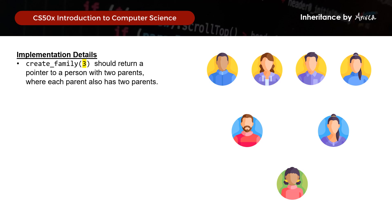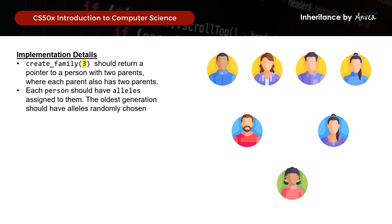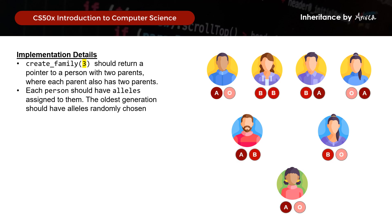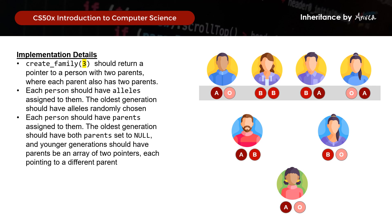For the implementation details, create_family(3) should return a pointer to a person with 2 parents, where each parent also has 2 parents — representing 3 generations. Each person will have alleles assigned from their respective parents, with the exception of the oldest generation whose alleles are randomly chosen. Each person should also have parents assigned to them except for the oldest generation, represented by an array of 2 pointers each pointing to a different parent.